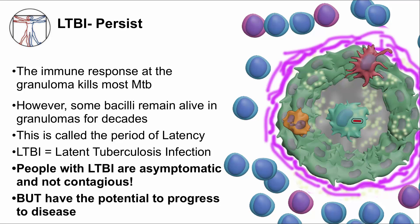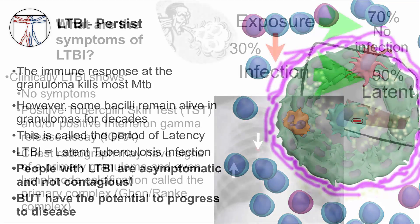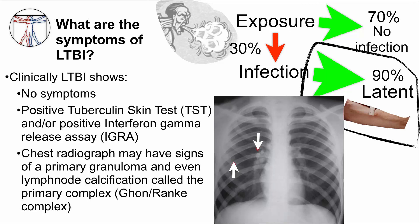A person with latent TB infection shows no symptoms. Clinically, it is very difficult to detect when a person has latent TB infection. There are some tests, including the tuberculin skin test and interferon gamma release assays, which will be discussed in other videos. Chest radiographs are typically normal, but sometimes can show localized infiltrates and hilar adenopathy, called the Ghon complex, or these can be calcified, called the Ranke complex. In the chest x-ray, the left arrow points to the tiny nodule that was the primary focus of infection, and the right arrow points to calcified hilar lymph nodes, which is where dendritic cells first brought MTB.